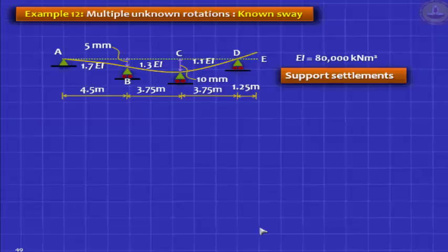We are not bringing loads. Span AB is 1.7 EI, span BC is 1.3 EI, span CD is 1.1 EI. It does not matter what span DE has because span DE will remain straight, no bending moment. It is an overhang.